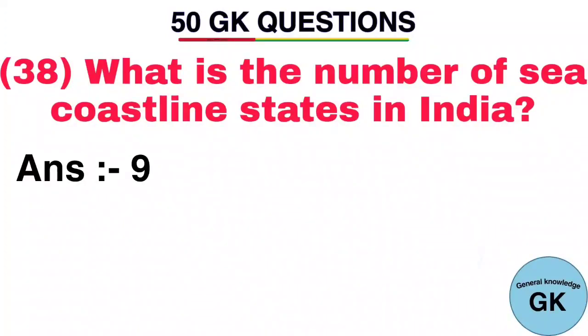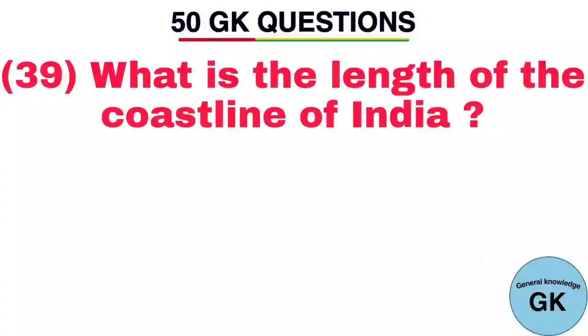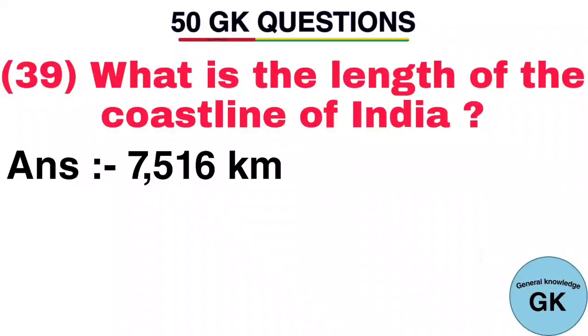Question number 39. What is the length of the coastline of India? Answer: 7,516 kilometers.